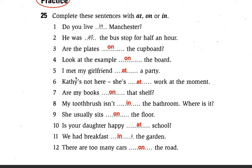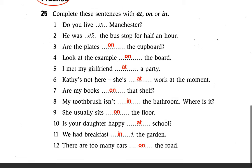Number five: I met my girlfriend at a party. 'At' is the preposition of place, so 'at' is the answer. Number six: She is not here, she is at work at the moment. 'At' is the answer — preposition of place.